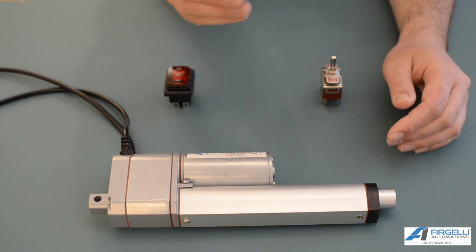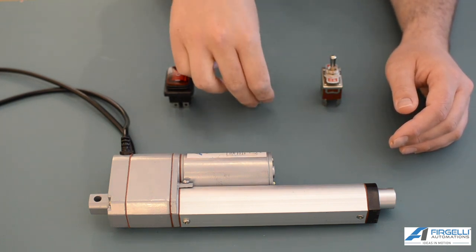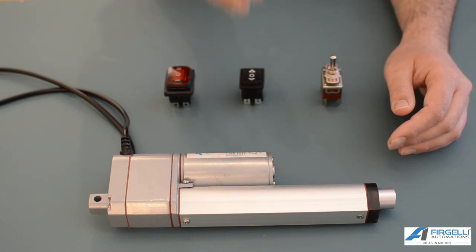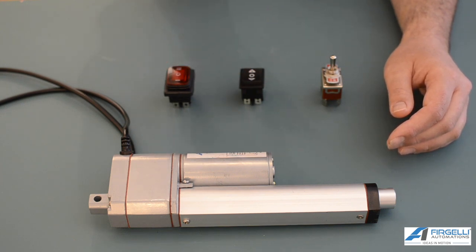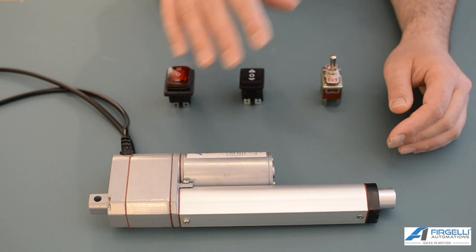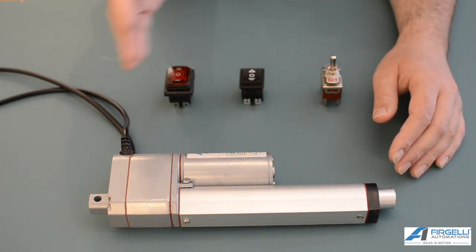You may also want to go with a switch that has an on-off-on position. This will allow us to first drive forward, second drive back, and also stop the linear actuator. You can find switches that are just on-on but that won't allow us to stop the linear actuator. It'll simply drive it forward and drive it back.